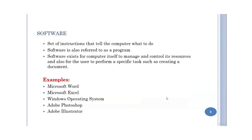Software is a set of instructions that tell the computer what to do. Software is also referred to as a program. Software exists either for the computer itself to manage its resources, or for the user to perform specific tasks, for example creating a document.